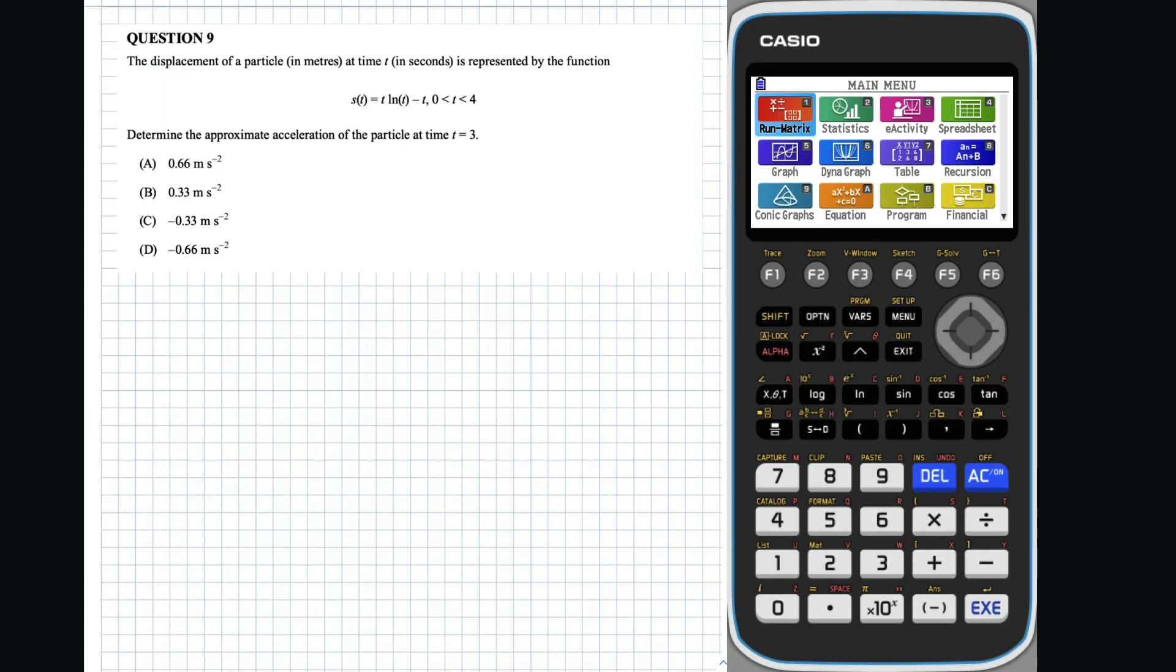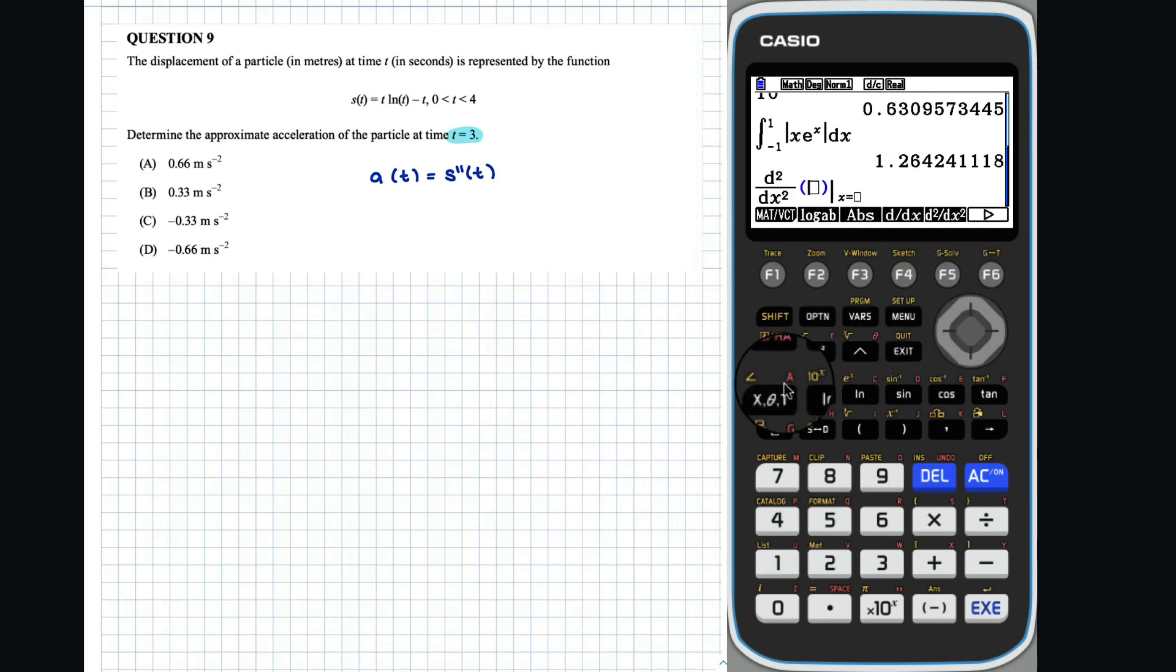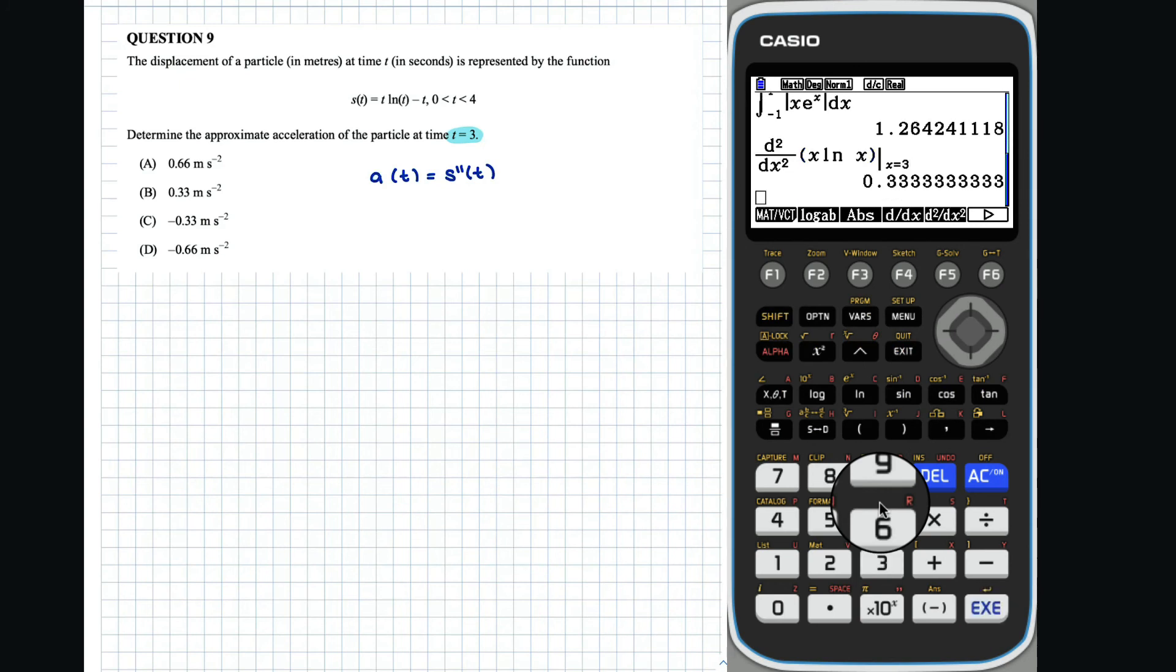Question 9: Recall that the acceleration of the particle can be found by differentiating s of t twice. Thus, to determine the acceleration at t equals 3, we can evaluate this. The correct answer is B, 0.33 metres per second squared.